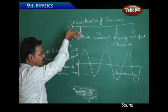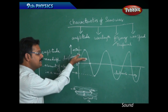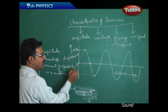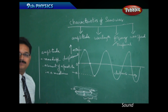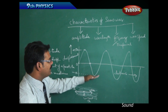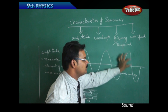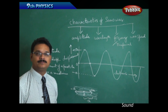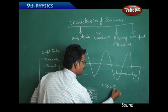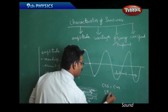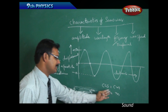The particle vibrates from positive amplitude to negative amplitude. Both are maximum displacements, but on opposite sides. Amplitude is defined as the maximum displacement of a particle in a medium. As the wave propagates, it moves from maximum to minimum amplitude in the forward direction. The unit of amplitude is centimeter in CGS or meter in SI units, since amplitude is a displacement.